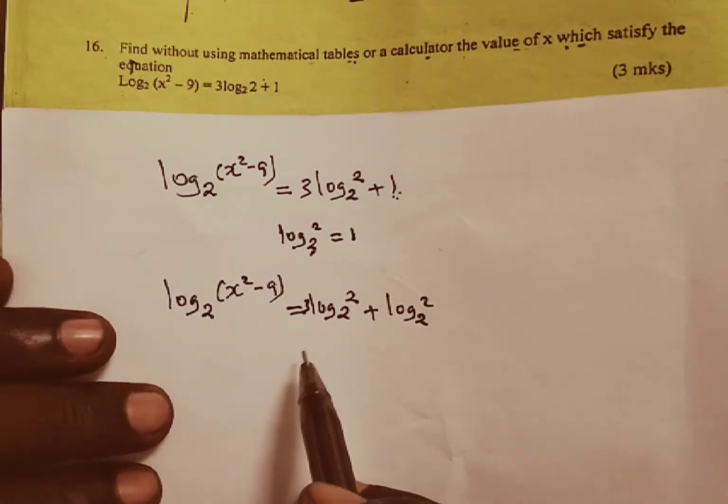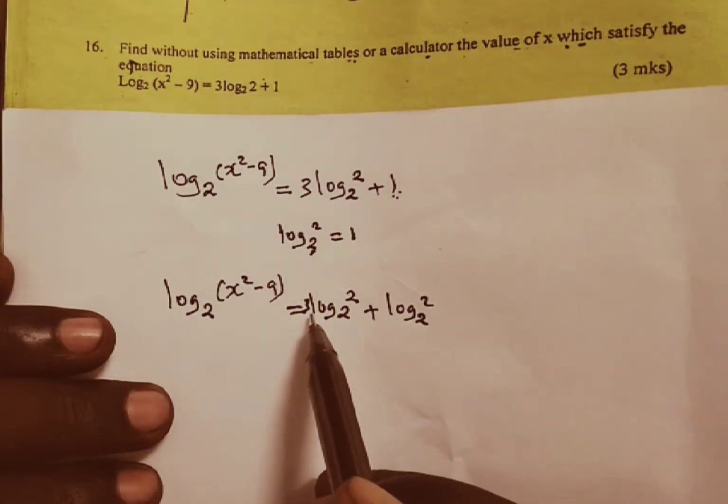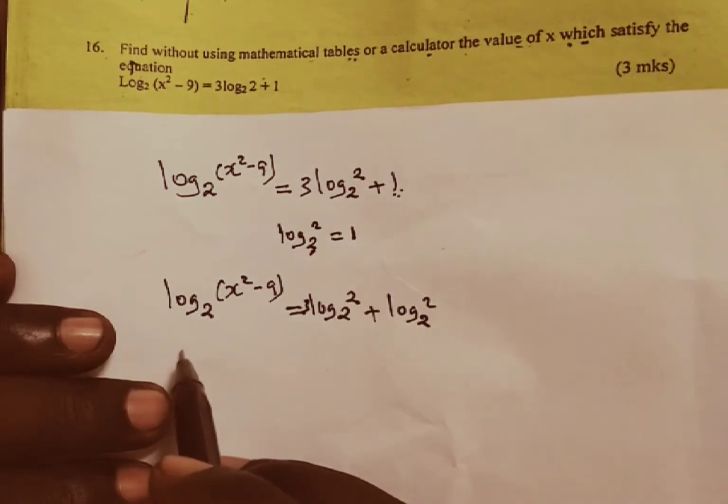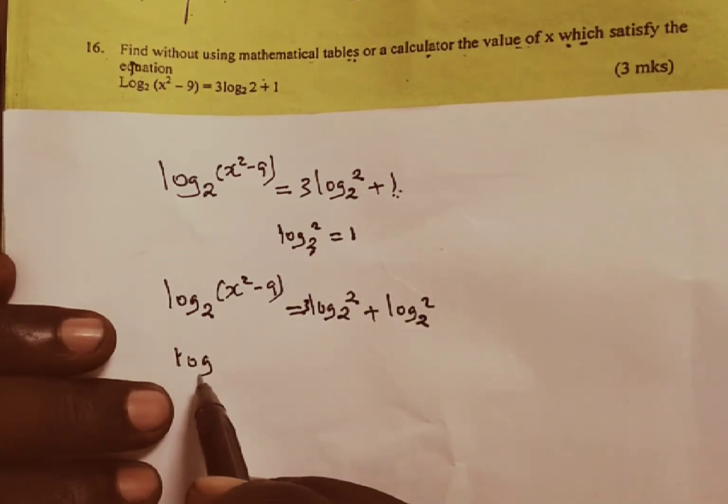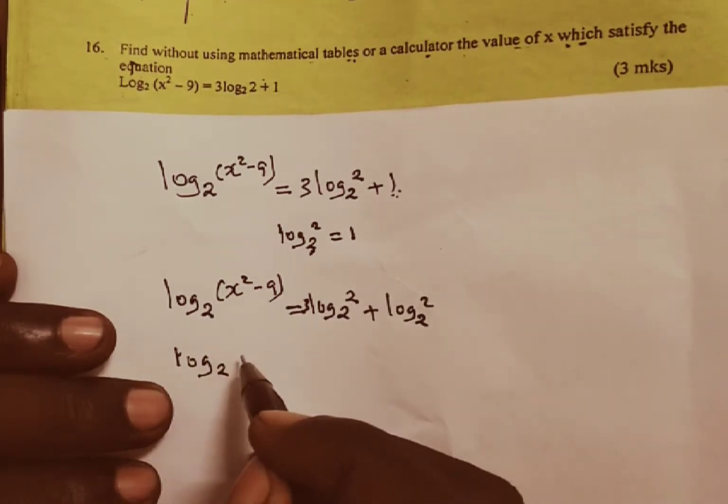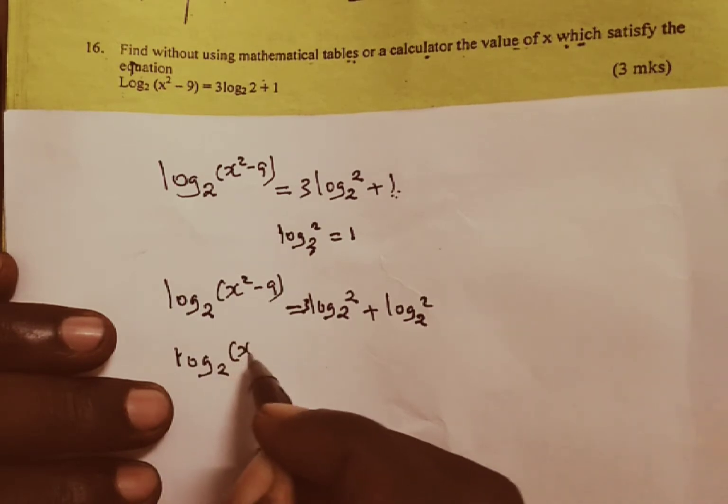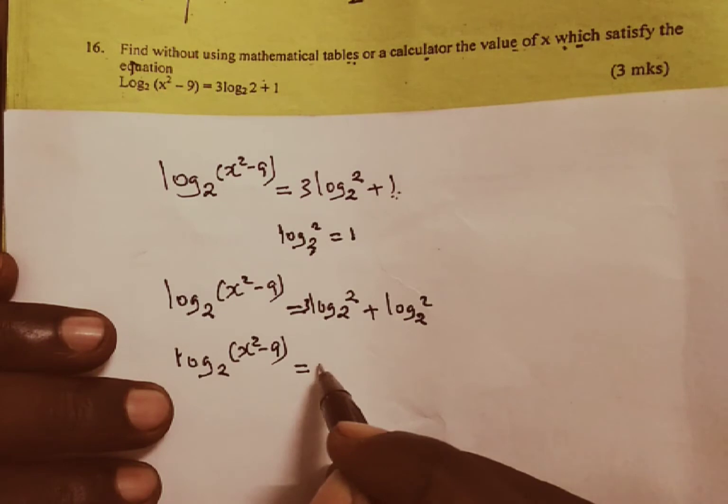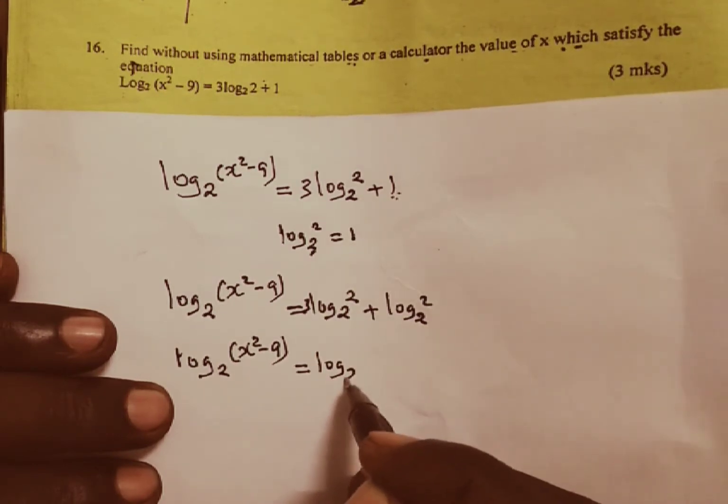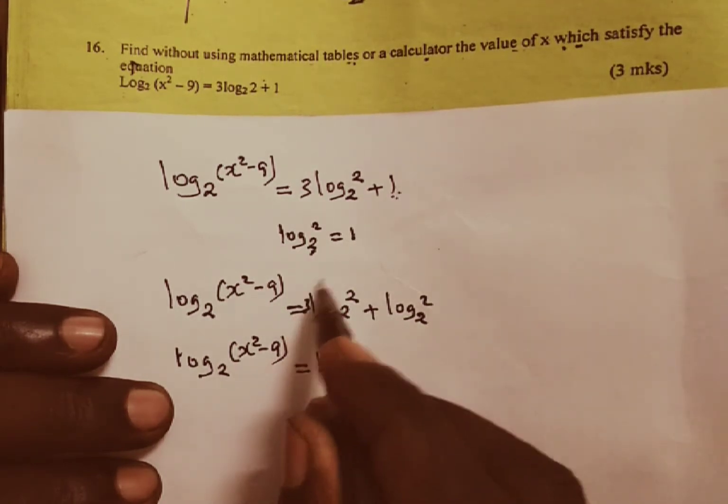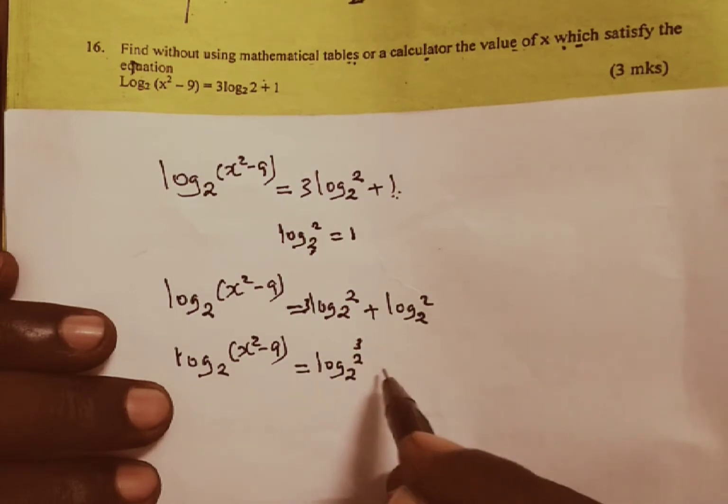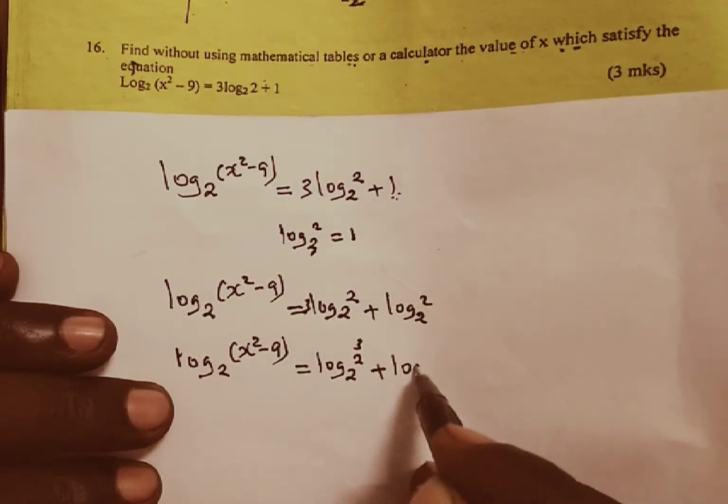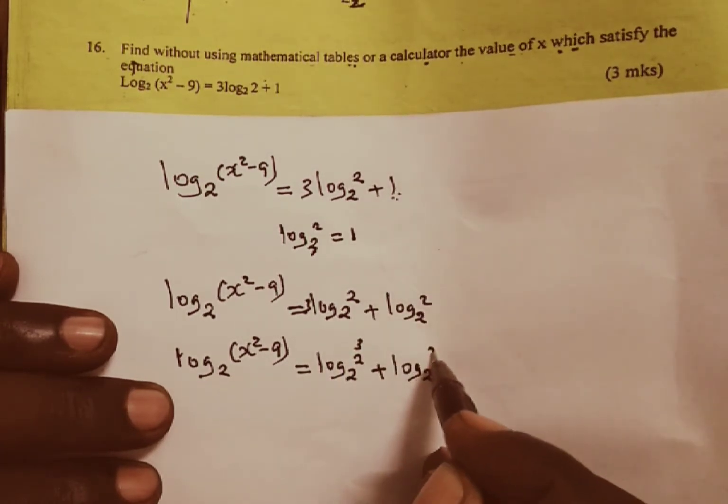From there now we can apply the rules of logarithms. The first thing we are going to do is to take this number behind the log and become the power so that we have the log of base 2 raised by x squared minus 9. And this one is going to be equal to the log of base 2 power 2. 3 goes and becomes the power, plus now the log of base 2 power 2.